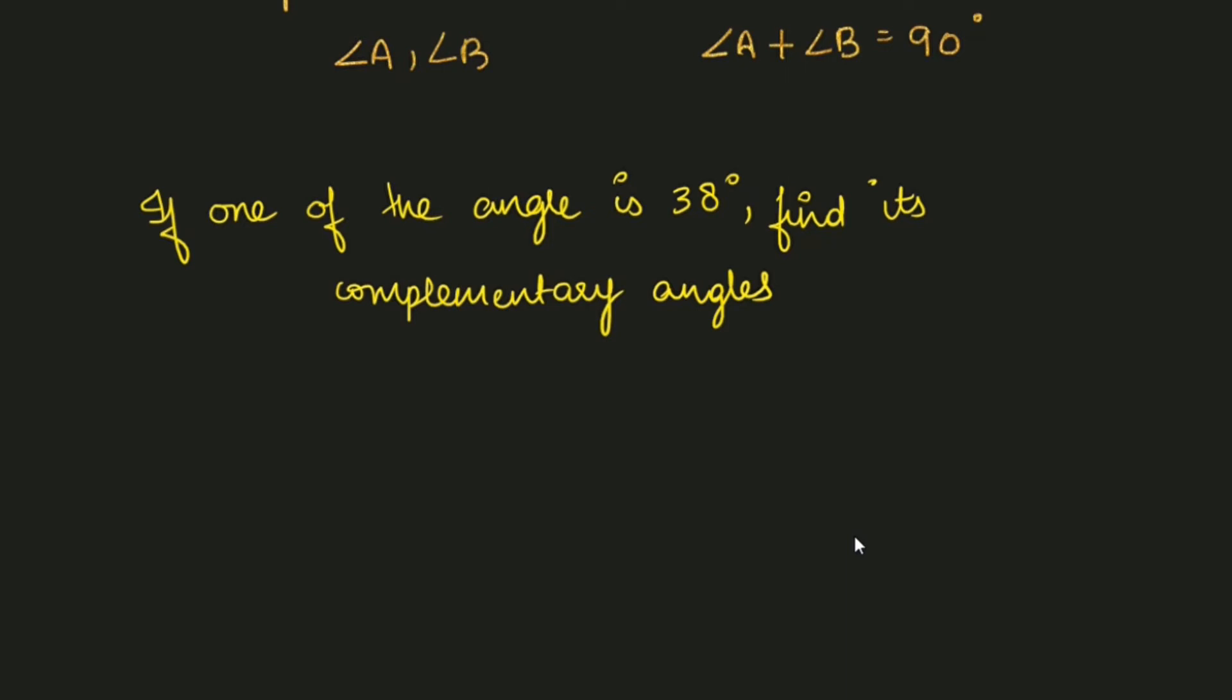One of the angle is 38 degrees, so yahaan par isko kaise solve kar sakti hai? So first aap likhenge ki one of the angle is 38 degrees. Aapko ek angle diya hua hai, aapko isko complementary angle nikalna hai - matlab aapko ek aisa angle nikalna hai jisko jab hum 38 se add kareenge to 90 degree aana chahiye.